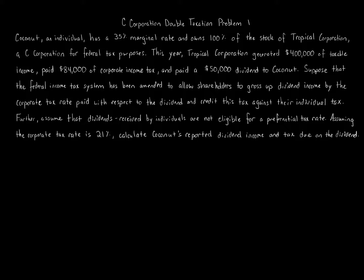This is a very interesting question. It's meant to show you the two levels of tax on C-Corporations and also what would happen in a different system where you're able to — what we call — gross up the amount paid in terms of the corporate tax and adjust for the individual tax, without getting the benefit of the preferential tax rate that some taxpayers get on long-term capital gains or qualified dividends.